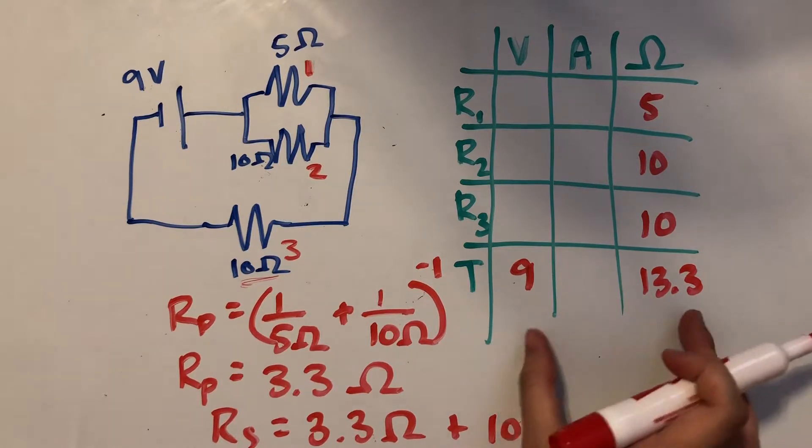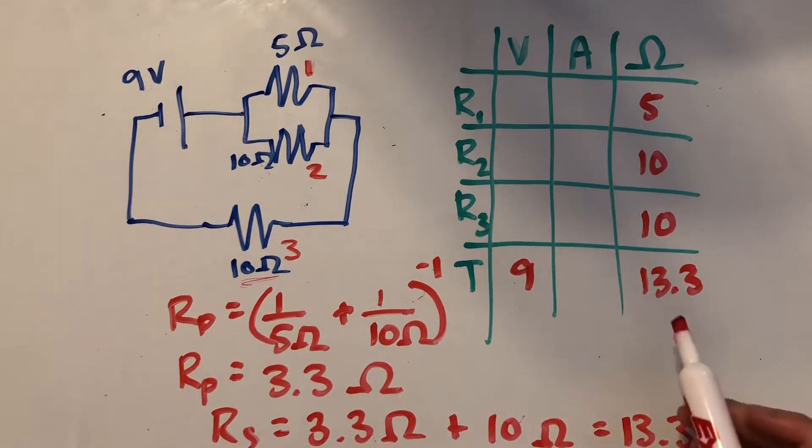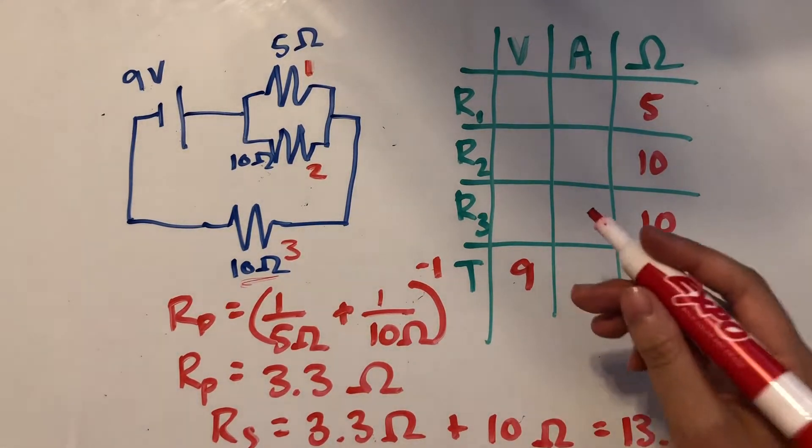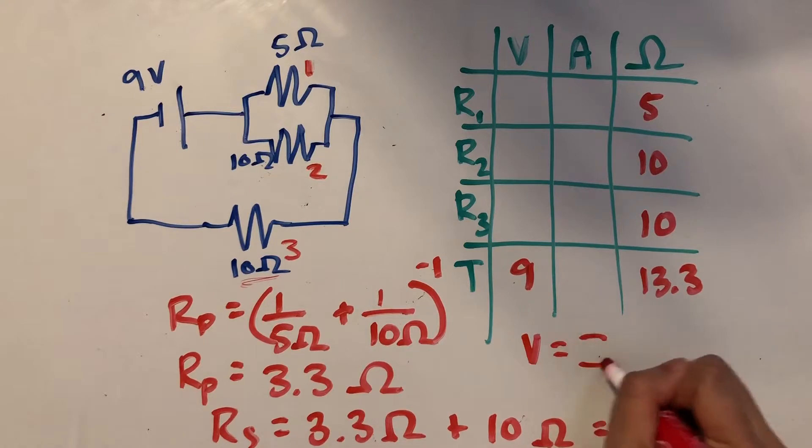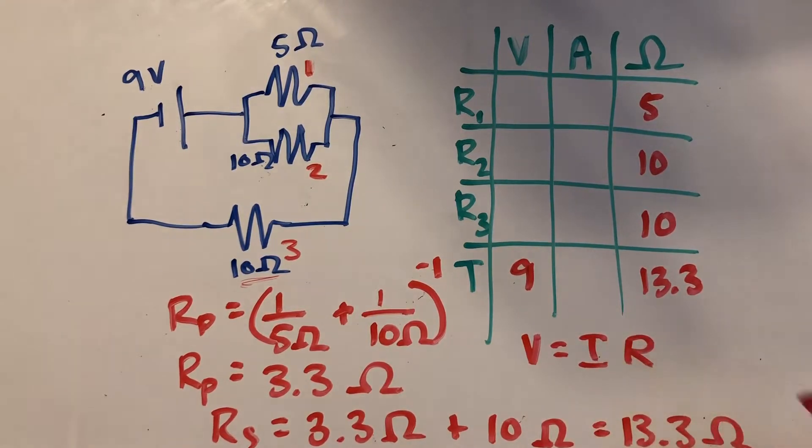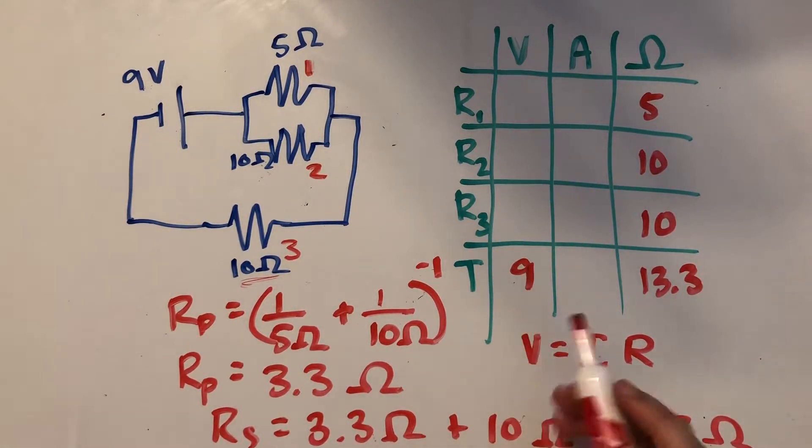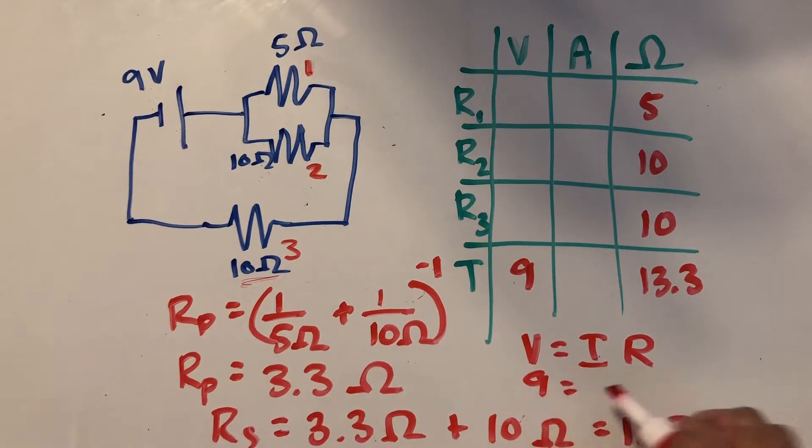And now that we have two of these values in the same row, we can use Ohm's law in order to find the third one. So remember that Ohm's law is equal to voltage times current times resistance. So we've got our voltage, that's 9 volts. We don't have our current. And we have our resistance, which is 13.3.